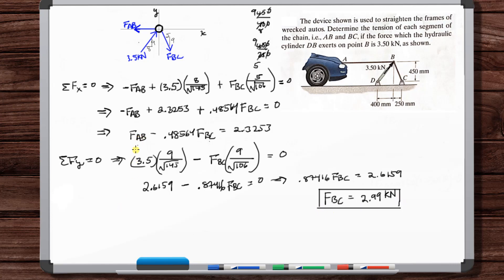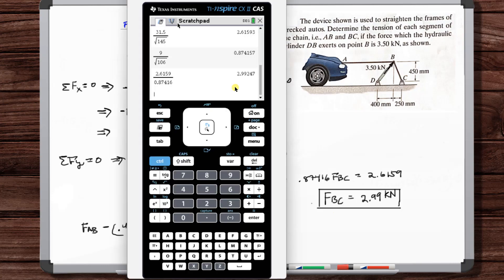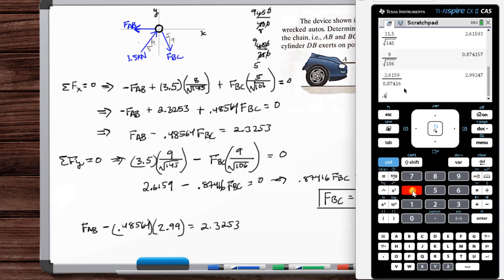Now let's just use this equation to find F_AB. F_AB minus 0.48564 F_BC, 2.99 is equal to 2.3253. So 0.48564 times 2.99, and we're going to add this to 2.3253.